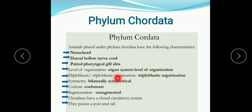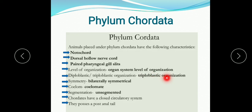They show triploblastic organization. Triploblastic means three germ layers are present — ectoderm, mesoderm and endoderm. All three germ layers are present at the embryonic stage. Symmetry: they show bilateral symmetry. They have a coelom, that is why they are known as coelomates. Body is unsegmented — they show an unsegmented body.